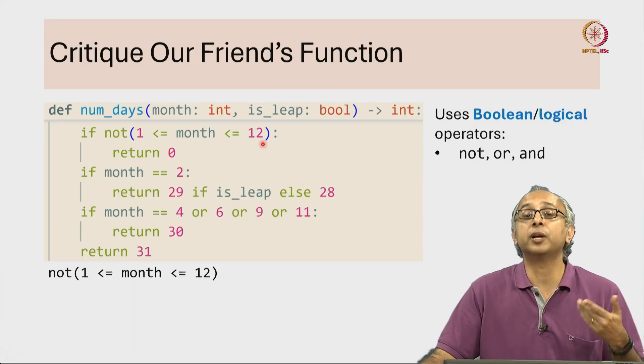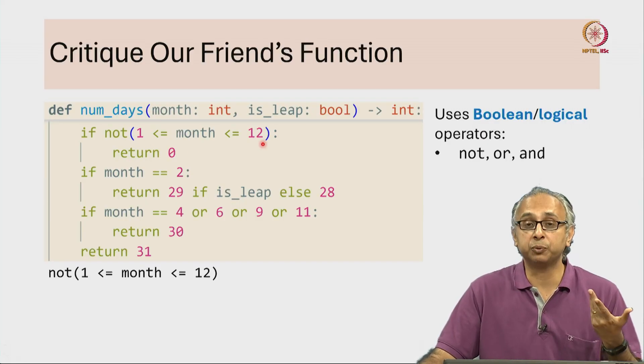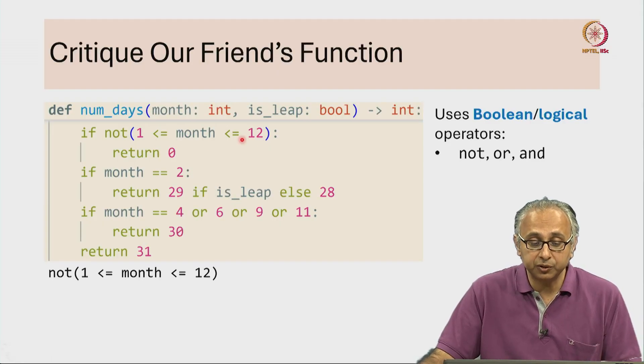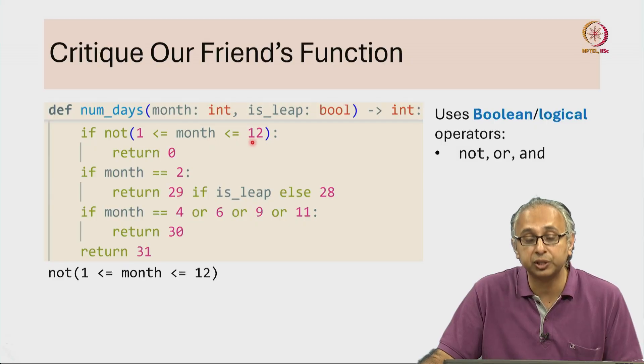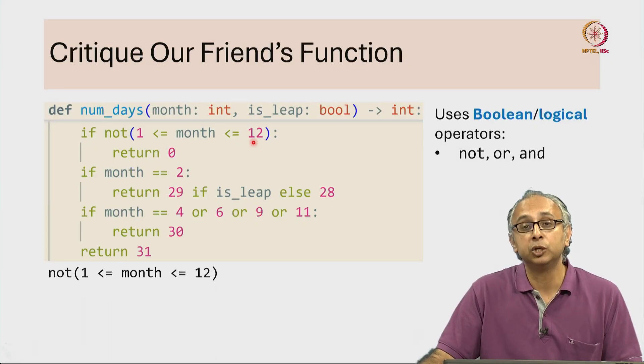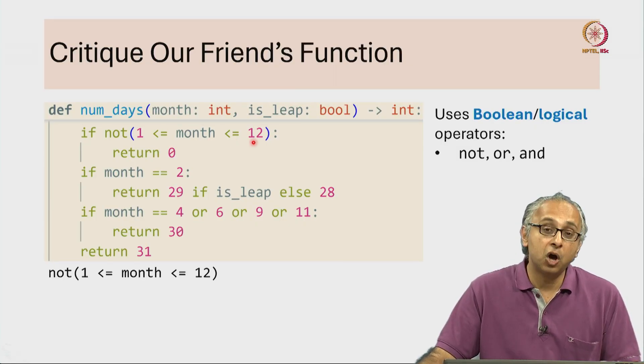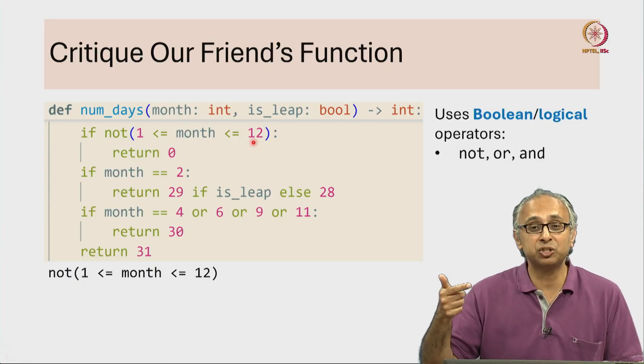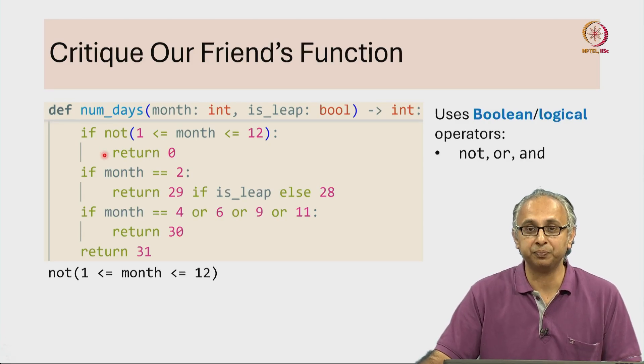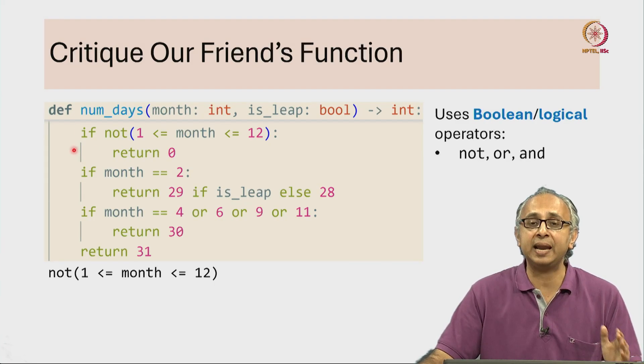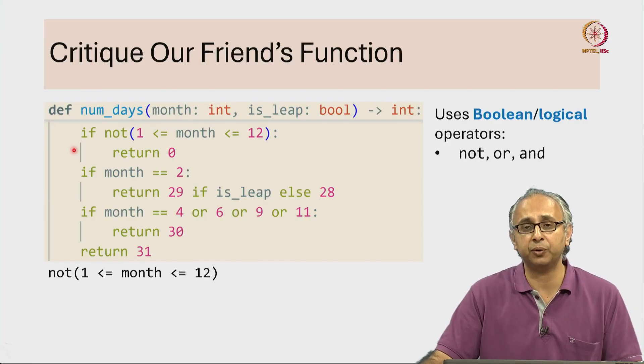So the only way we can come to this if condition is if the given month is not in this range 1 to 12. If it was outside this range, for example if month was 0 or month was 13, in either of those cases this condition would not be true. So this expression would evaluate to false and not of false is true. And then this if condition would be if true and so we would go in here and return 0. You can see that this piece of code handles illegal months and correctly returns 0 in those cases. And whenever the month is legal we proceed to the next condition.